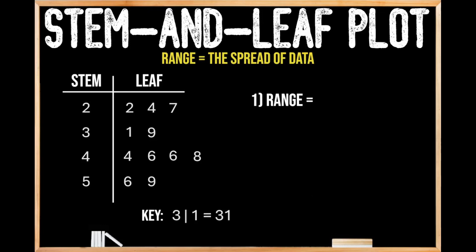If we look to the bottom of our stem and leaf plot, we can see our answer key which tells us that a stem of 3 and a leaf of 1 is going to be equal to 31. So now that we understand how to read this stem and leaf plot...